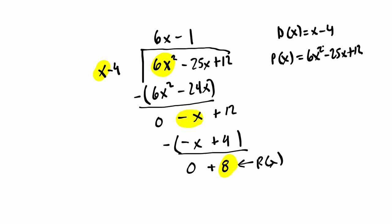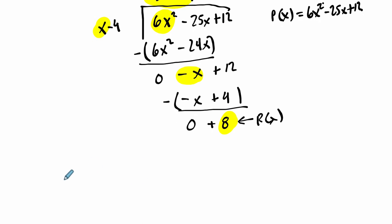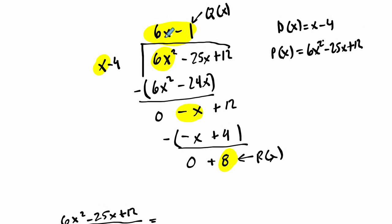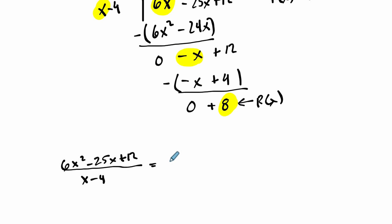So the last thing is we have q of x up here. So this is q of x. And we have all the pieces to write this as an answer. So we could say our polynomial function p of x, which was this, divided by x minus 4, the divisor, equals the quotient. So that was 6x minus 1, that's q of x, plus the remainder over our divisor.